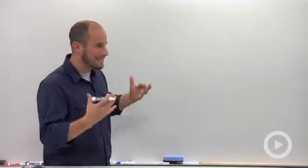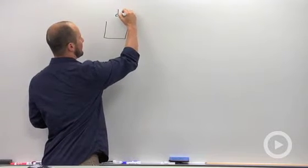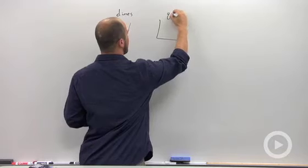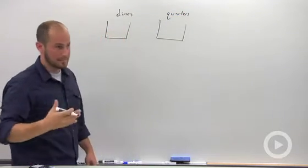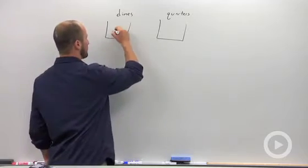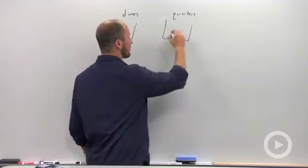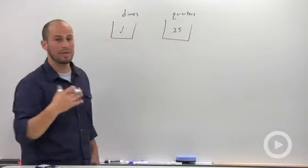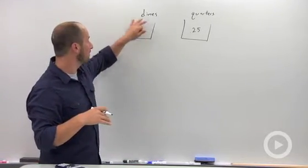So basically we know we have dimes and we know we have quarters. Dimes are worth ten cents or a tenth of a dollar. Quarters are worth 25 cents or a quarter of a dollar, and we don't know how many of these we have. Let's say we have a certain number of dimes, let's call it X.